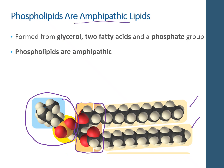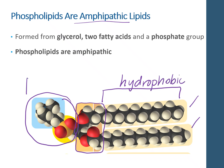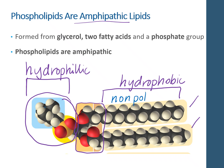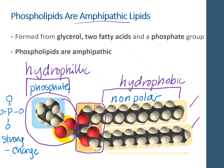Phospholipids are amphipathic, meaning that one part of the structure has a hydrophobic region and the other side has a hydrophilic region. The fatty acid tail is your hydrophobic region because it is a chain of carbon-to-carbon bonds, making it nonpolar. The phosphate head is your hydrophilic region — a phosphate group attached to four oxygens. This is a really electronegative molecule that also acts as an acid, so there is a strong negative charge on this end, making it hydrophilic.